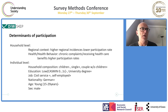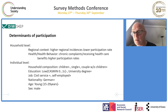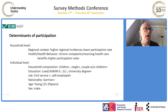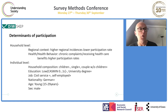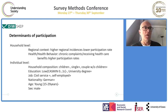At the household level, regions with higher incidences show lower participation rates. Households with chronic complaints or receiving health care benefits show higher participation rates. At the individual level, household composition plays a role: households without children have lower participation rates, single households have higher rates. Low-educated individuals are less prepared to participate, while those with a university degree have higher participation rates.